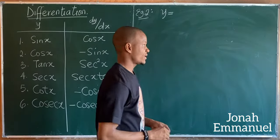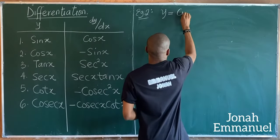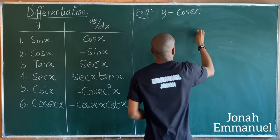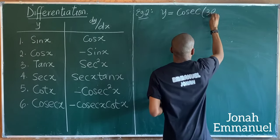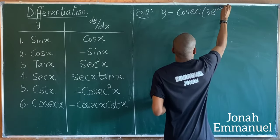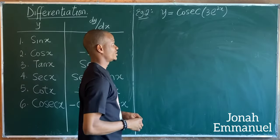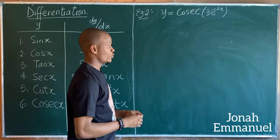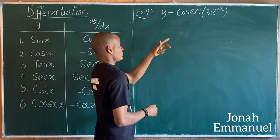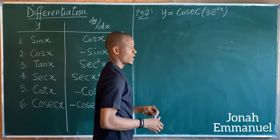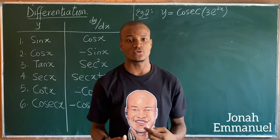Example two: let's say y is equal to cosec(3e^2x). I'm asked to differentiate this. I'll use chain rule, because most of the time when a trig function has something else in the brackets, the method employed is chain rule.